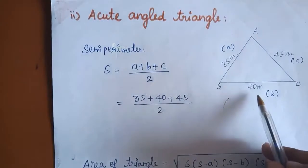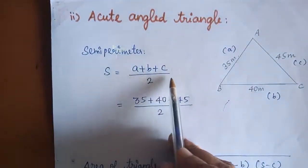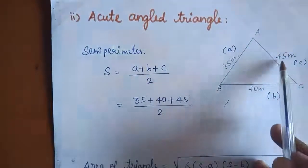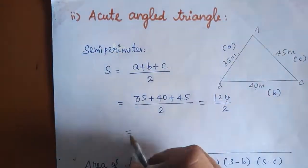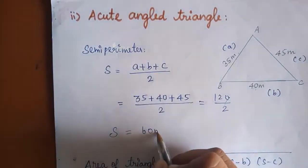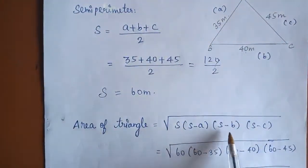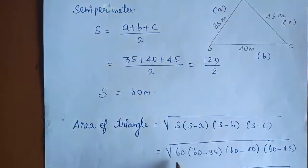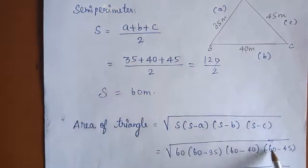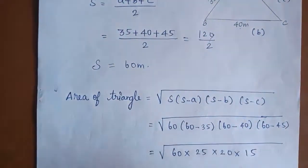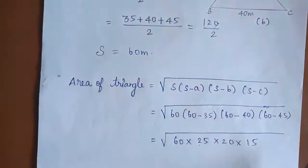For the acute-angled triangle: A = 35 m, B = 40 m, C = 45 m. Semi-perimeter S = (35 + 40 + 45)/2 = 120/2 = 60 m. Area = root of 60 × (60−35) × (60−40) × (60−45) = root of 60 × 25 × 20 × 15.